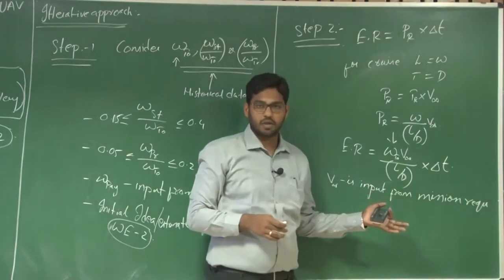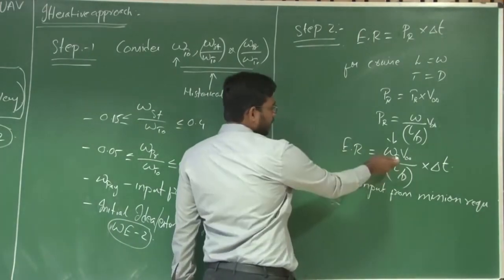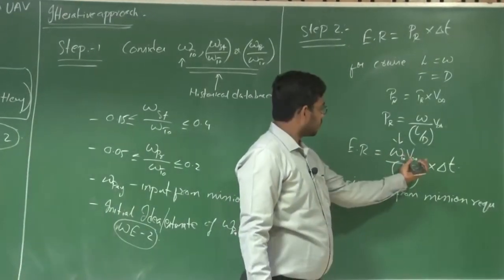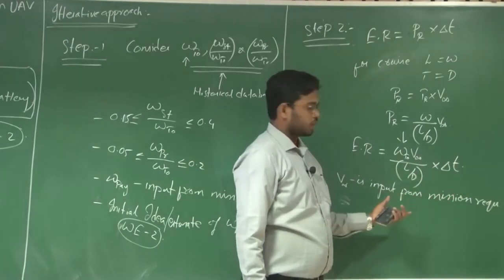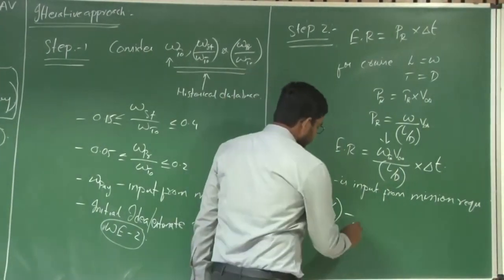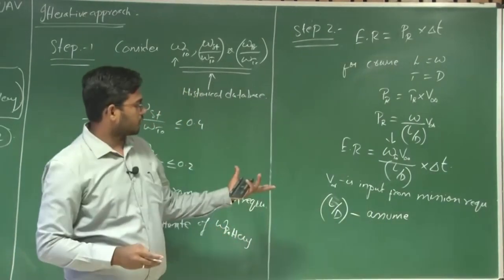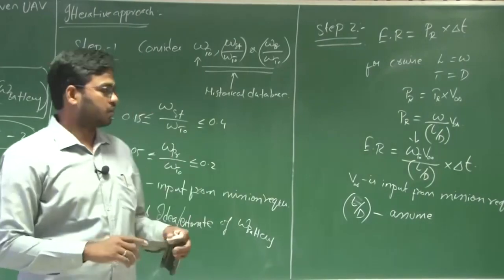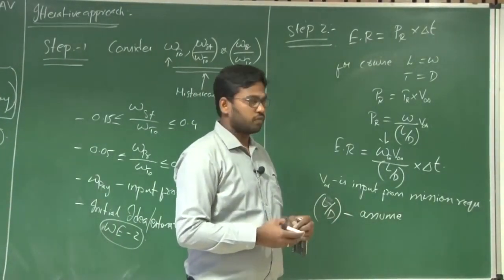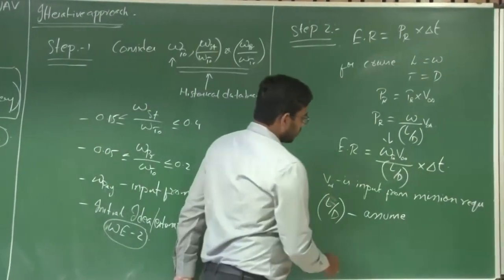V infinity can be directly or indirectly derived from the mission requirement — the velocity of cruise flight. You have the previous UAV data: the takeoff weight of the nearby UAV which can perform a similar mission. You have W_T0, and you can assume a value of L/D, also known as aerodynamic efficiency. Typical values of L/D will be 8 to 14 for a normal UAV with an aspect ratio of around 10. For a glider-kind UAV, L/D ranges from 20 to 50. These values can be considered as input from the historical database.